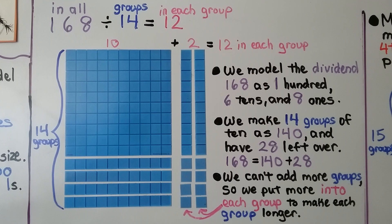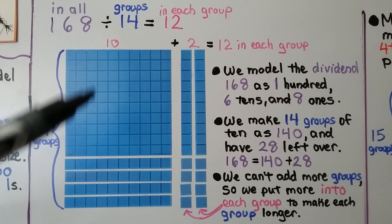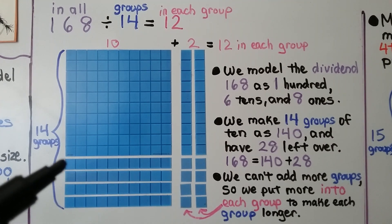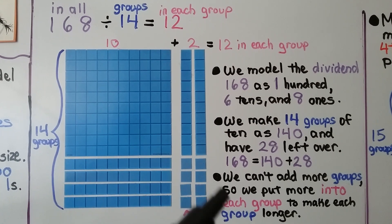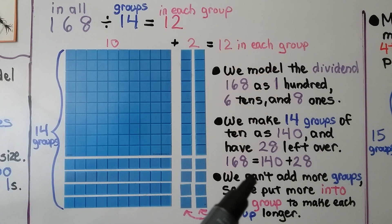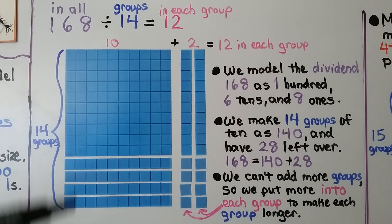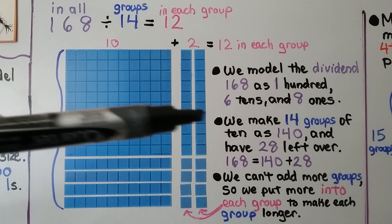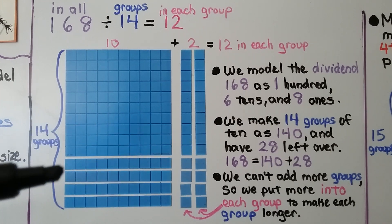Here we have 168 divided by 14. We model the dividend 168 as a 100, 6 tens, and 8 ones. We make 14 groups of 10 as 140. We have 28 left over because 140 plus 28 equals 168. We can't add more groups because we're only supposed to have 14, so we put more into each group going across in the rows.